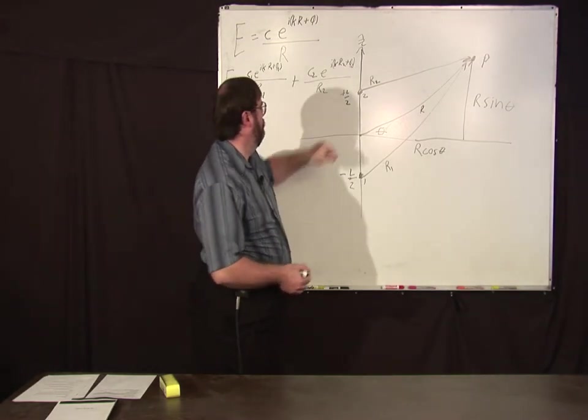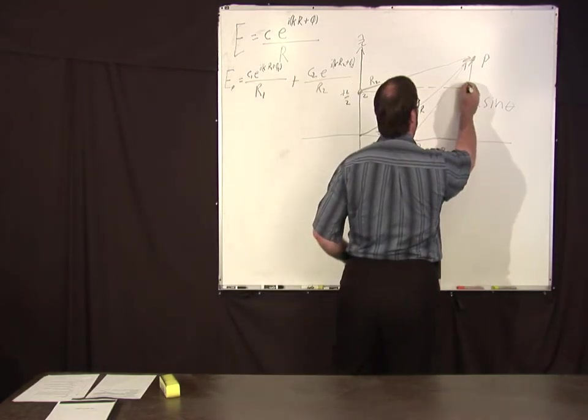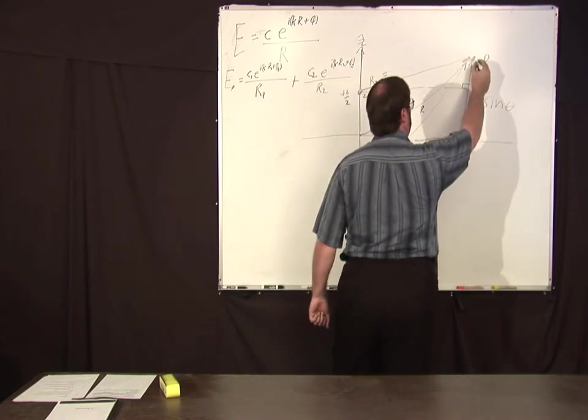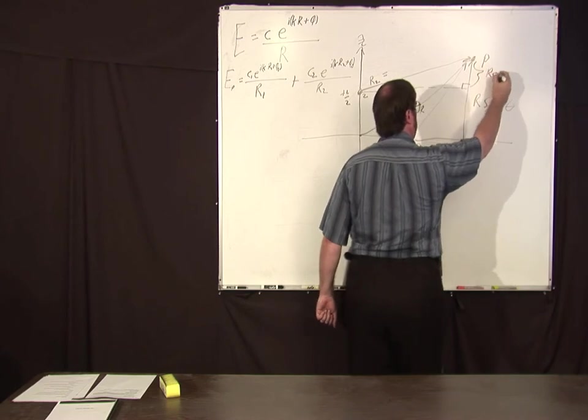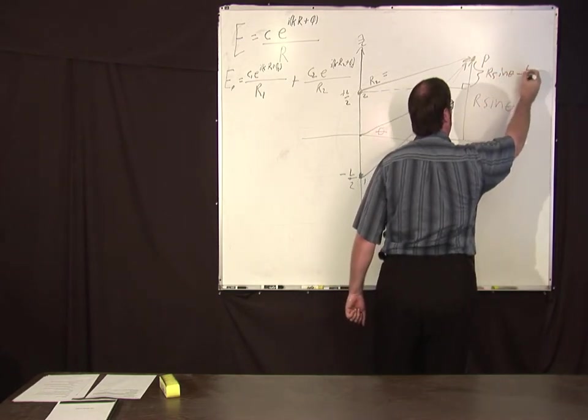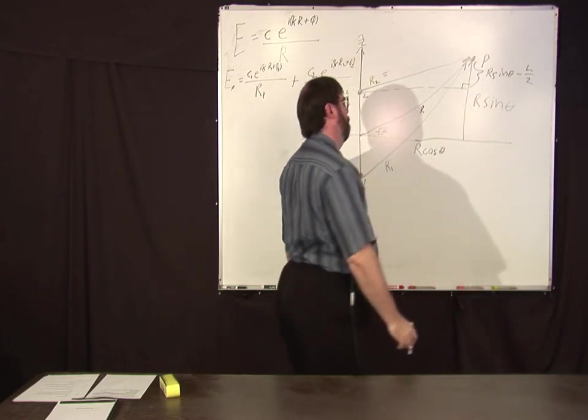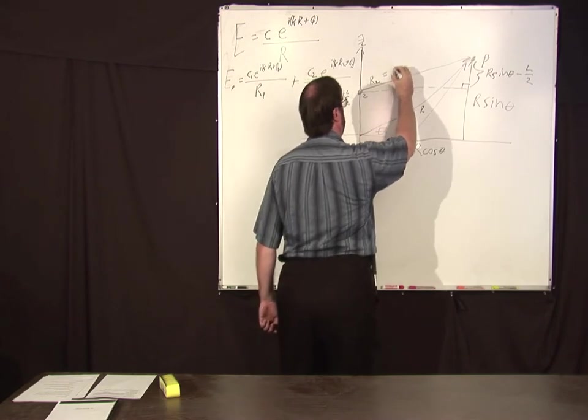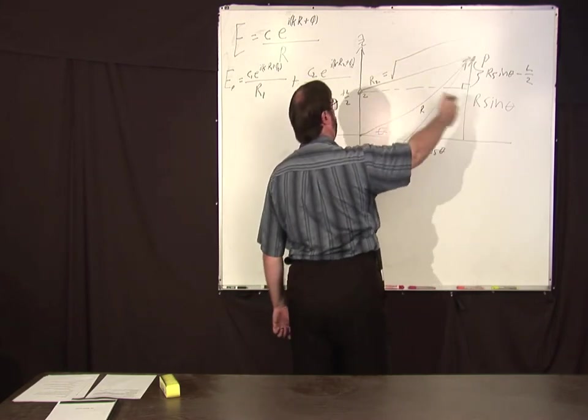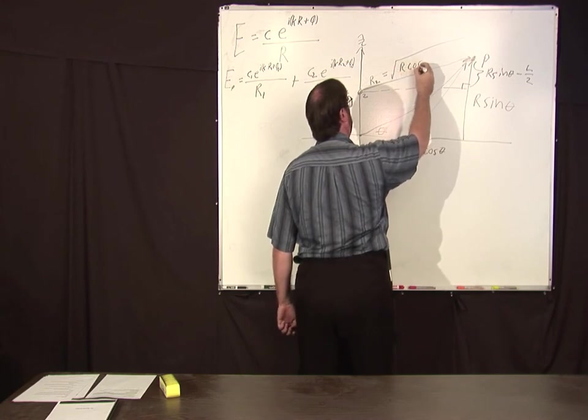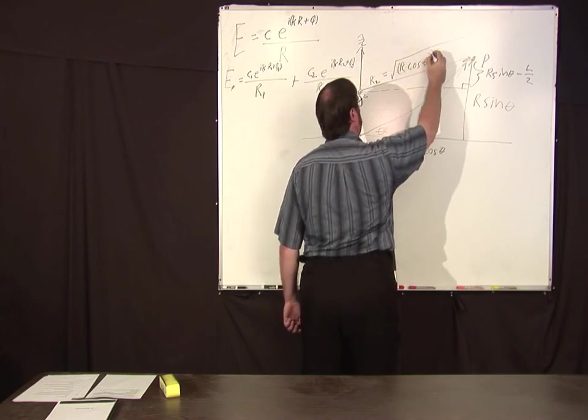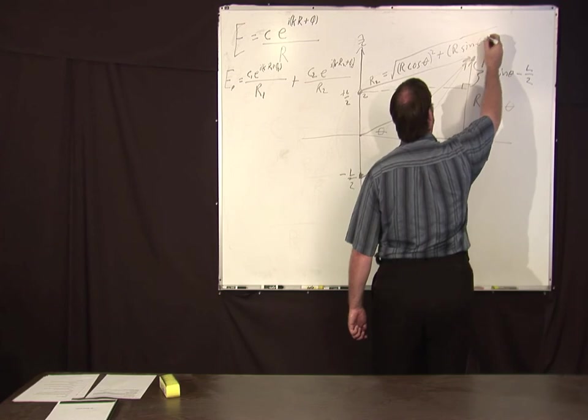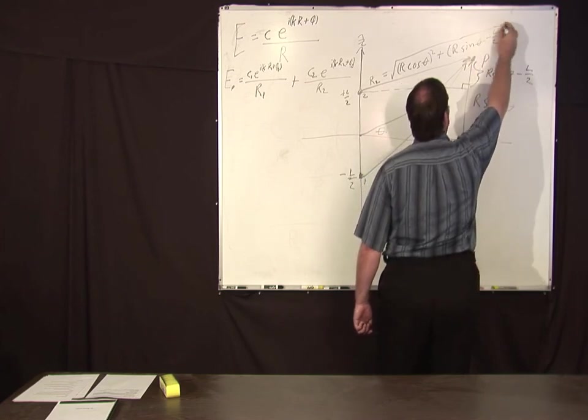Well, what's r2? Well you can use the Pythagorean theorem on this triangle here. This distance here is r cosine theta minus l over 2. Right. So this is going to equal from the Pythagorean theorem, r cosine theta squared plus r sine theta minus l over 2 squared.